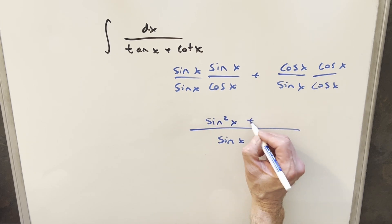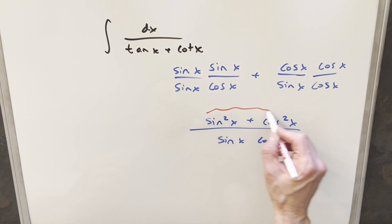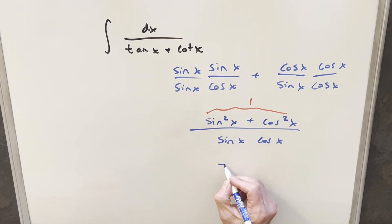And then for the second one, we get cosine squared. But now this thing here, sine squared x plus cosine squared x, that's just 1. So for this whole thing, it's just going to become 1 over sine x, cosine x.